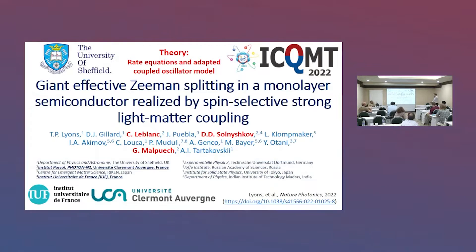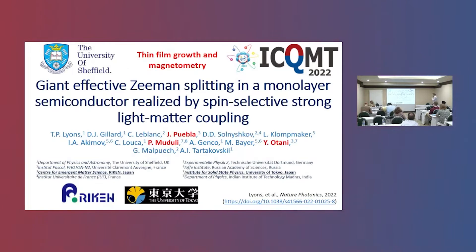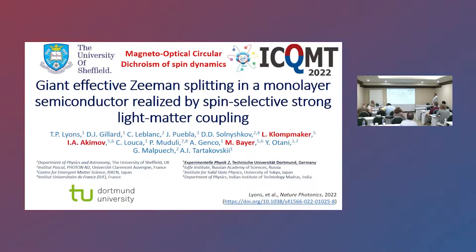The guys at Claremont University in France did the theory — they worked on the rate equations and adapted the coupled oscillator model. The guys in Tokyo, at the University of Tokyo and Riken, grew our thin film and performed the initial magnetometry. And then University of Dortmund did the magneto-optical circular dichroism measuring the spin dynamics, which fed directly back into our rate equation.